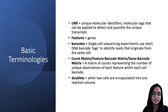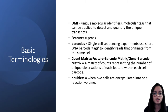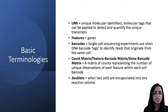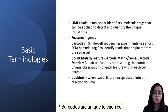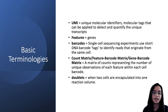Now let's talk about some basic terminologies used when processing single cell RNA-seq data. UMIs are unique molecular identifiers — molecular tags that can be applied to detect and quantify unique transcripts. What we refer to as features in single cell data are nothing but genes. Barcodes are DNA barcodes which are tags to identify reads that originate from the same cell.